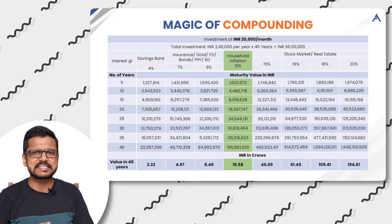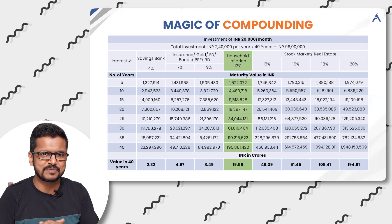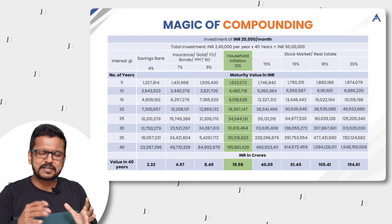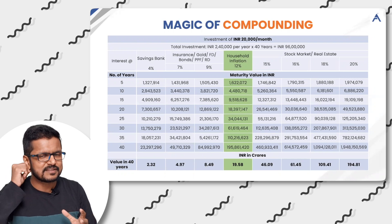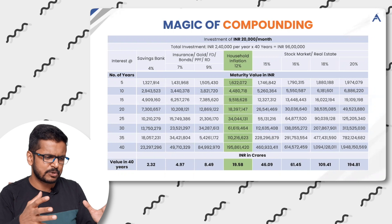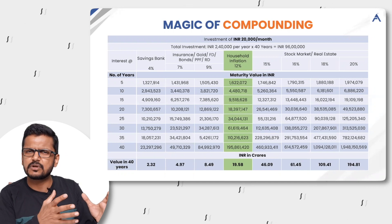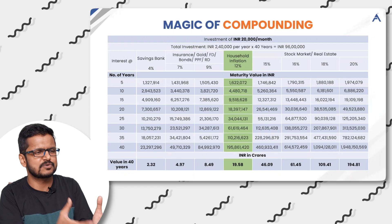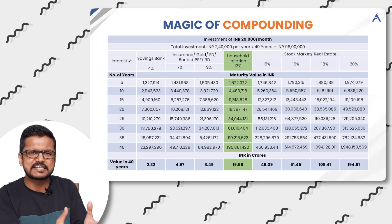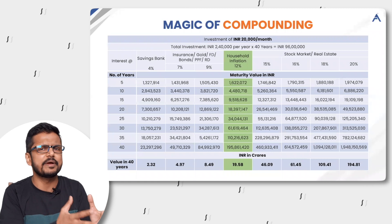When I show this table to participants, a couple of people make a counter-argument saying this looks quite irrational — we don't need this kind of money, this is good for the presentation, but you don't need 40, 60, 100 crores kind of money over 40 years. This is too big.